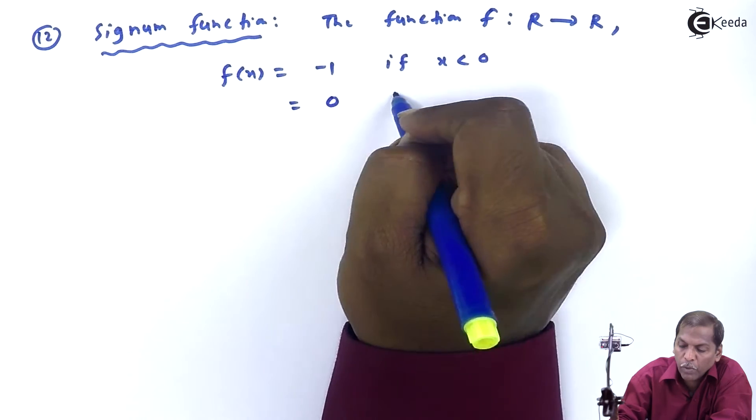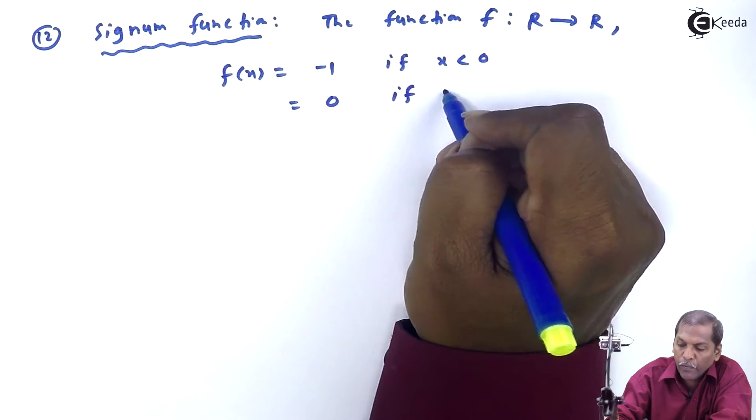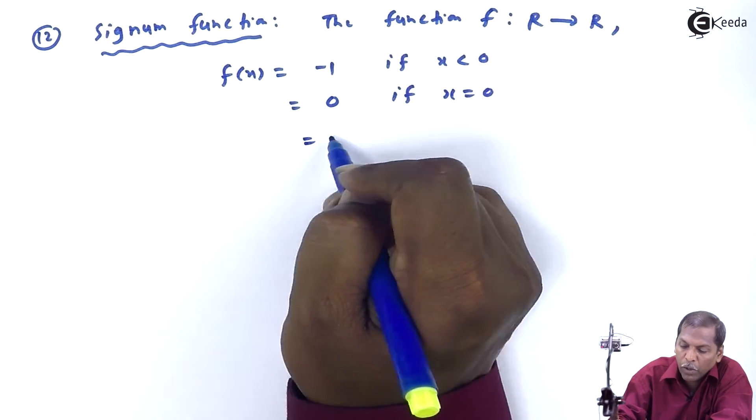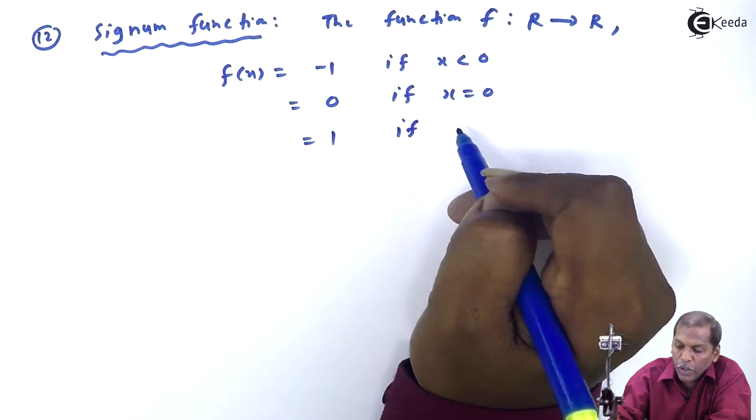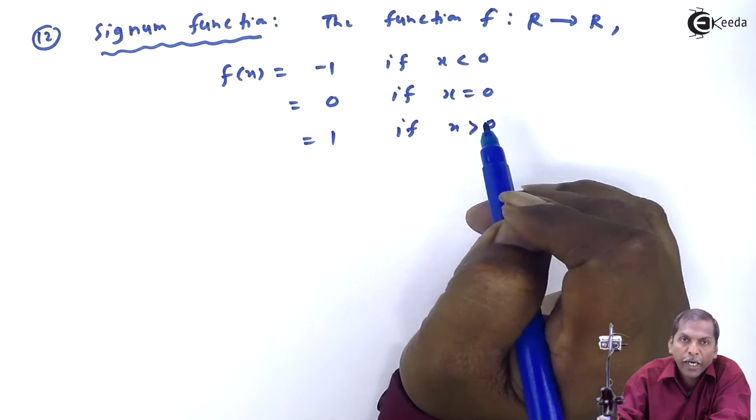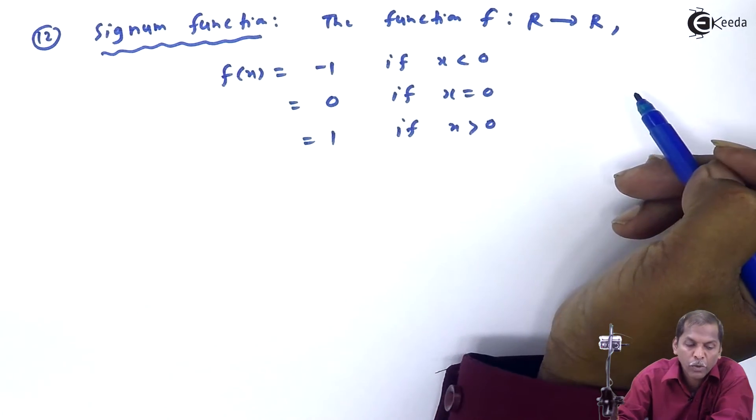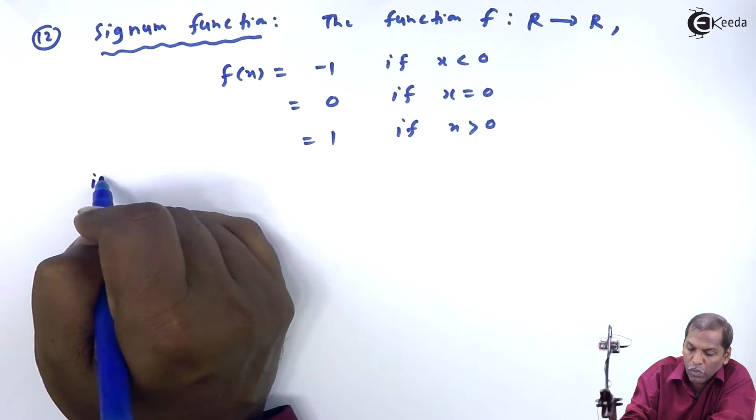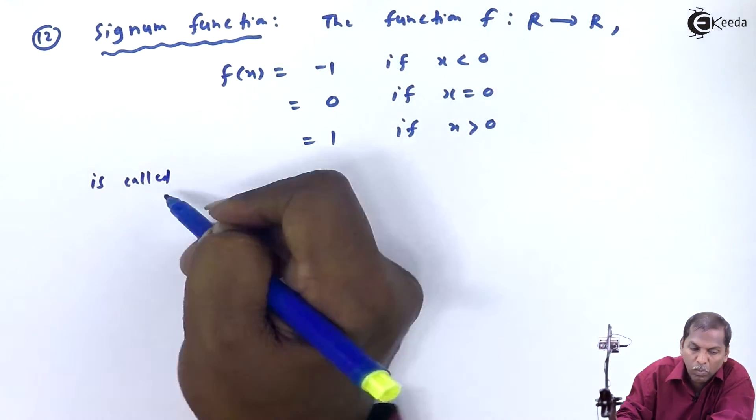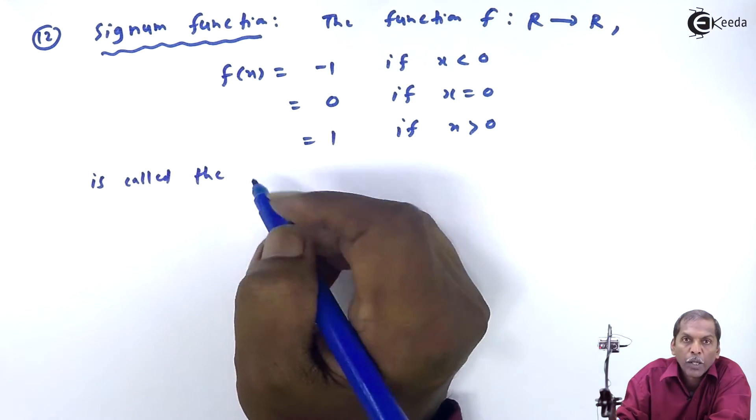equals 0 if x = 0, equals 1 if x > 0, is called the signum function.